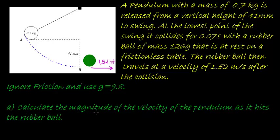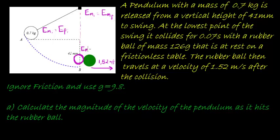First question: calculate the magnitude of the velocity of the pendulum as it hits the rubber ball — in other words, when the pendulum reaches the lowest point, what is its velocity? We use the fact that initial mechanical energy equals final mechanical energy. Initial mechanical energy is simply equal to the initial potential energy, and at the bottom it has no height, so the final mechanical energy equals the final kinetic energy.